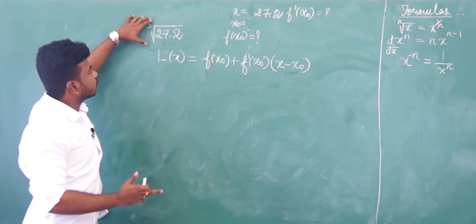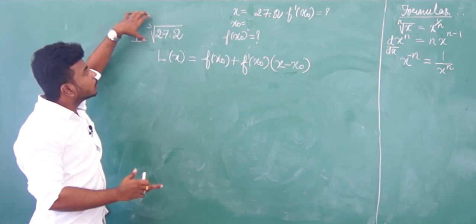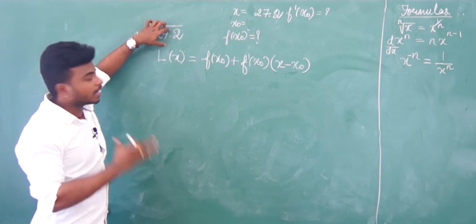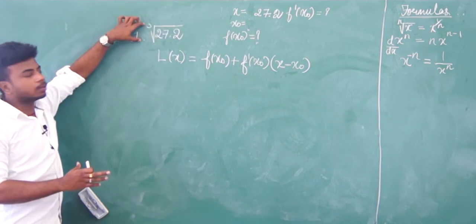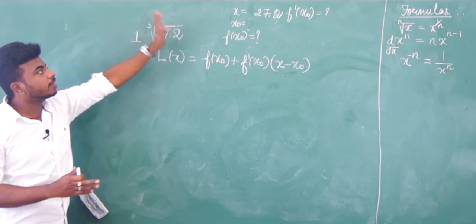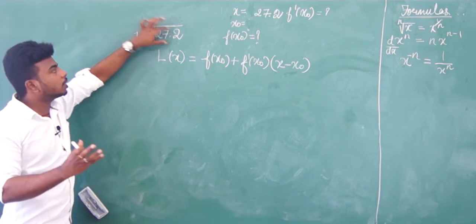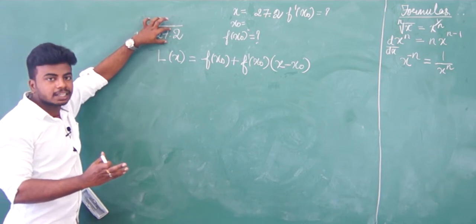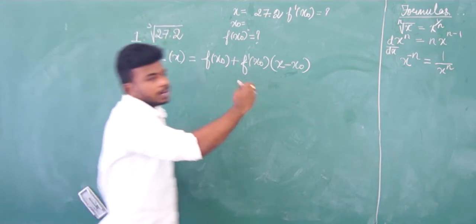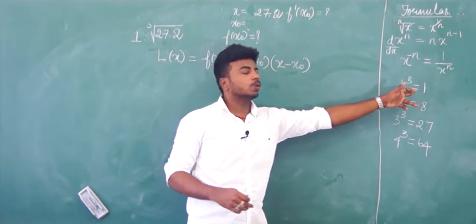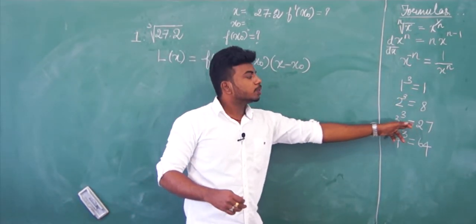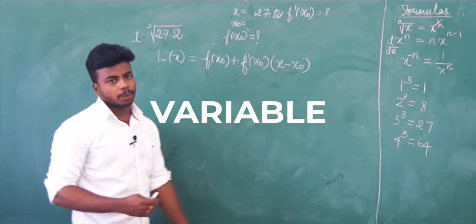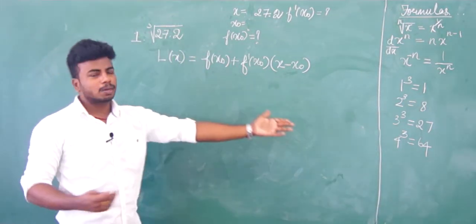The function is cube root. When you choose x0, you should choose a perfect cube number. The cube numbers are: 1 cubed = 1, 2 cubed = 8, 3 cubed = 27, 4 cubed = 64. These are the cube numbers. Our value is 27.2.